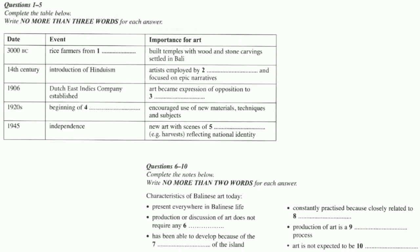At first, this was only on a small scale, but it had important effects. Expatriate artists from Holland and Germany settled on the island, bringing paper, Chinese ink, and other new materials with them. They worked with local artists, encouraging them to experiment with concepts like naturalism, expressionism, light and perspective, as well as to move away from the traditional focus on narrative painting towards something closer to their own experience.